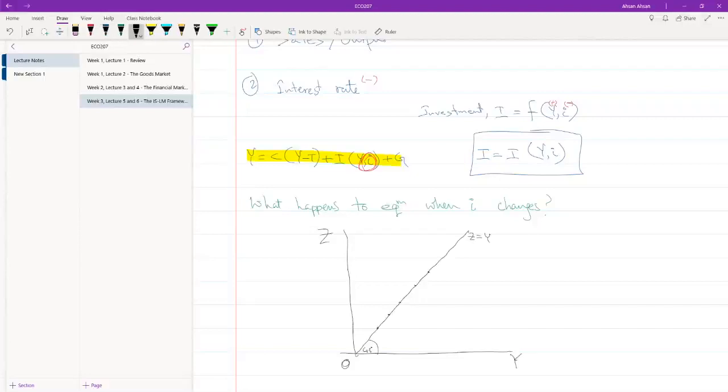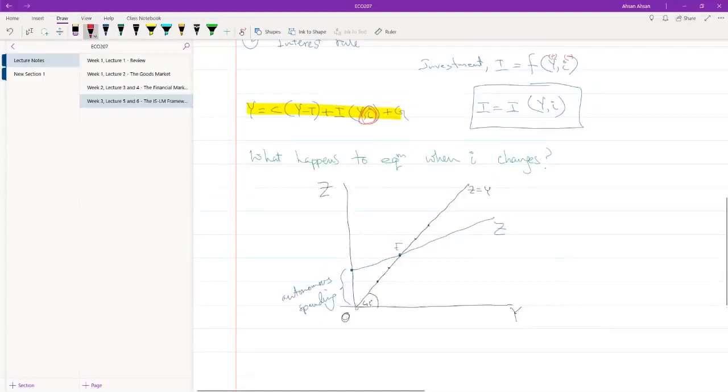Now let me draw the demand curve Z, and we have done that already as well in chapter 3. This is effectively Z. This right here is the autonomous spending or the autonomous demand, basically the part of our Z that does not depend on income. Since this is the point where the lines intersect, this is the equilibrium because at that point, output which is Y and demand which is Z are equal.